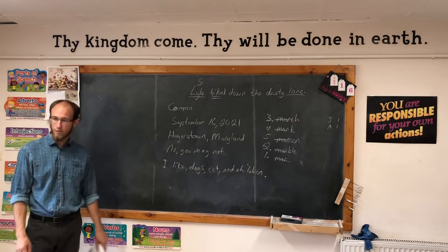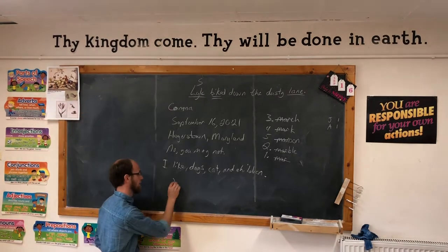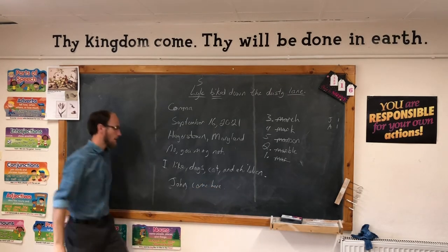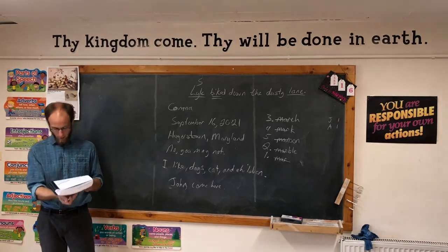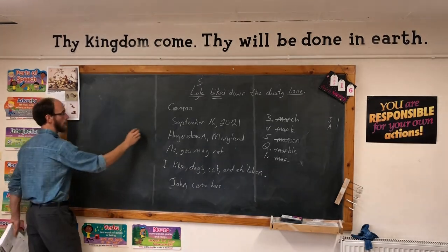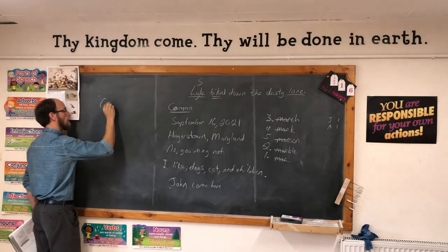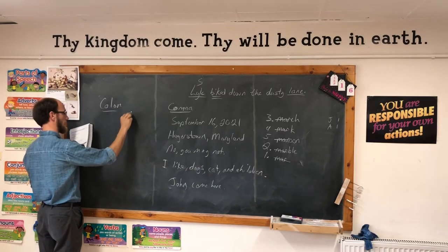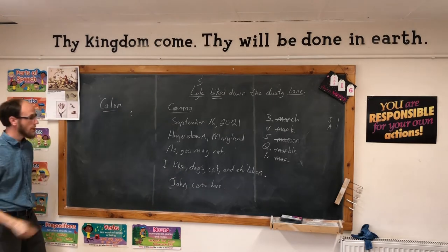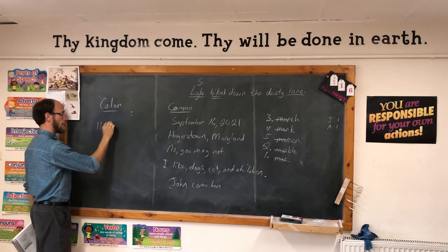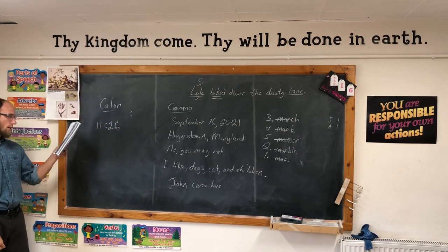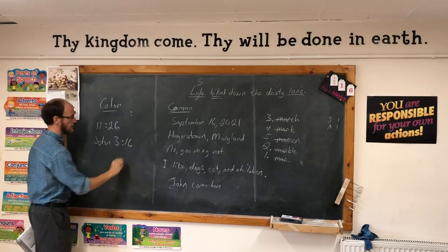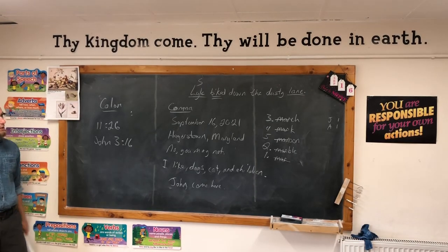Write a comma also after the person you're talking to: John, come here. It's getting pretty sloppy down there. John, come here — put a comma after the word you're talking to. And then a few rules for colons. A colon looks like two dots. Put a colon between the hour and the minute of a time: right now it is about 11:26. Put the colon in there. And put the colon in for Bible references: John 3:16. Okay, those are the comma rules and colon rules.